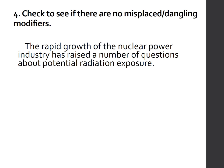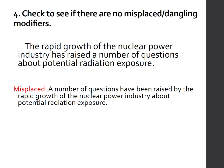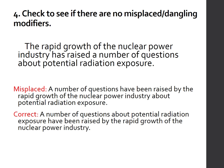Number four: check to see if there are no misplaced or dangling modifiers. Example: 'The rapid growth of the nuclear power industry has raised a number of questions about potential radiation exposure.' The direct object is 'a number of questions about potential radiation exposure,' and the verb becomes 'has been raised.' If you wrote 'a number of questions have been raised by the rapid growth of the nuclear power industry about potential radiation exposure,' you misplaced the modifier — the prepositional phrase 'about potential radiation exposure' should be near the noun it modifies. The correct version: 'A number of questions about potential radiation exposure have been raised by the rapid growth of the nuclear power industry.'